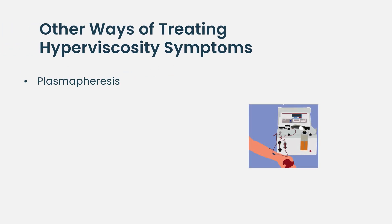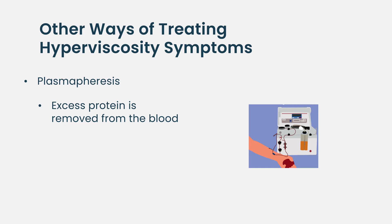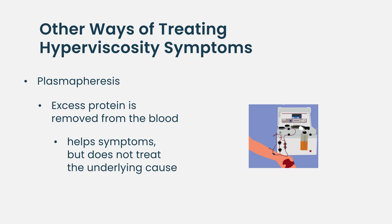There are other ways of treating hyperviscosity symptoms relatively rapidly. That includes a procedure called plasmapheresis, where you connect the patient's vein through a venous catheter or line to a machine programmed to take out excess protein. One can relieve symptoms within a few hours by removing the excess protein. However, this is not the definitive measure, because the underlying cause — increased production of protein — persists and must be treated with anti-myeloma or anti-Waldenström's treatment. Plasmapheresis or plasma exchange can rapidly lower the protein and help relieve symptoms.